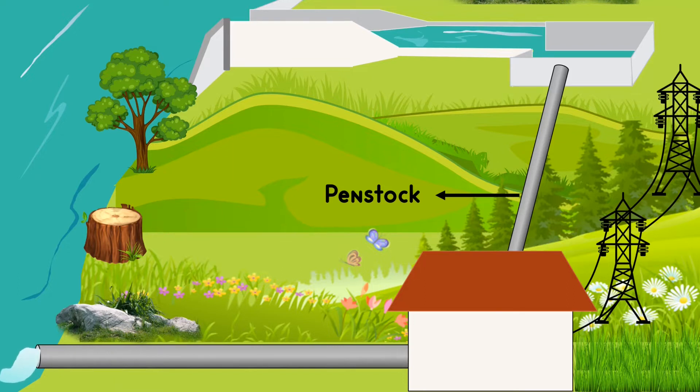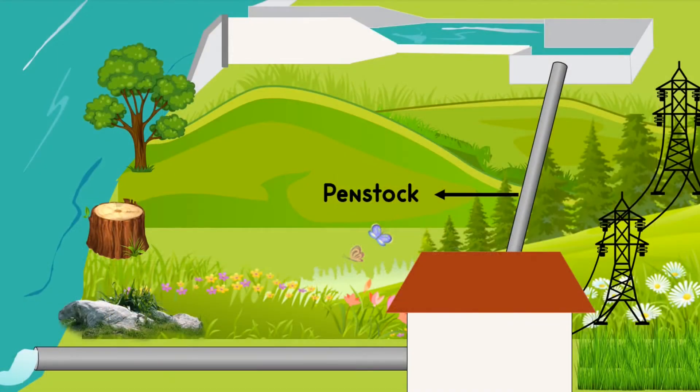This type is called run-of-river hydropower plant. This primarily relies on the flow of the river to generate electricity. Most run-of-river facilities do use a small dam to ensure enough water enters the penstock. However, they cannot store large amounts of water for future use.